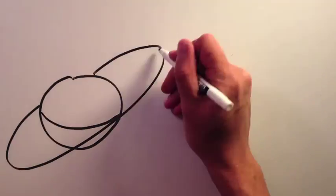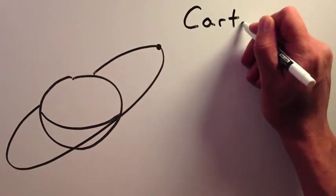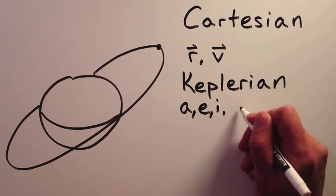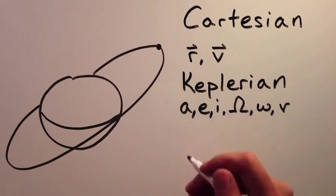There are many different ways to describe a satellite's orbit about a planet. However, you are most likely to encounter one of two methods: Cartesian elements and Keplerian elements.